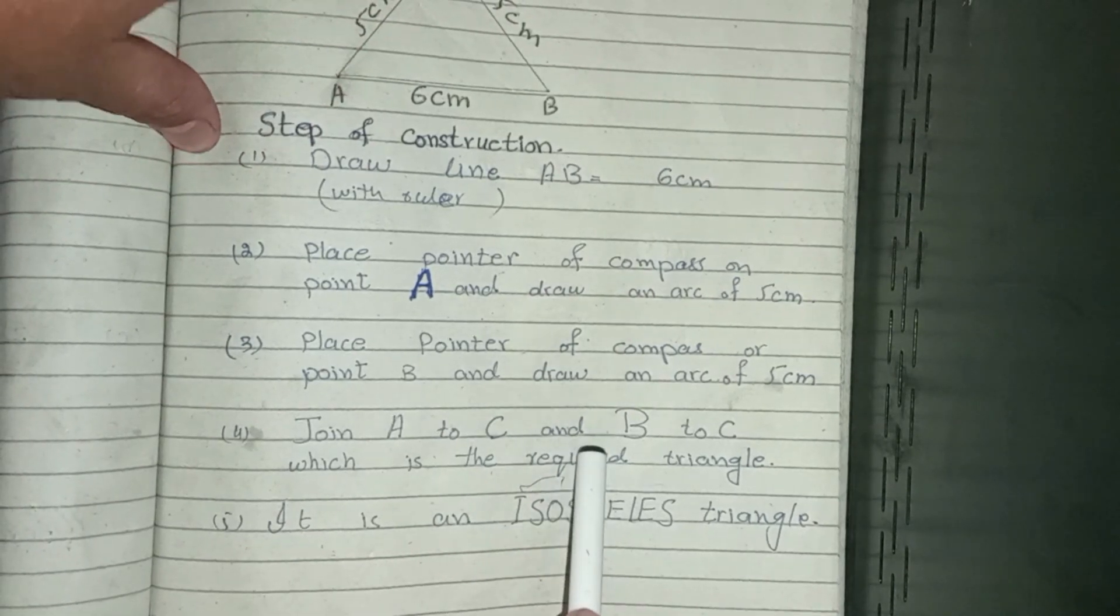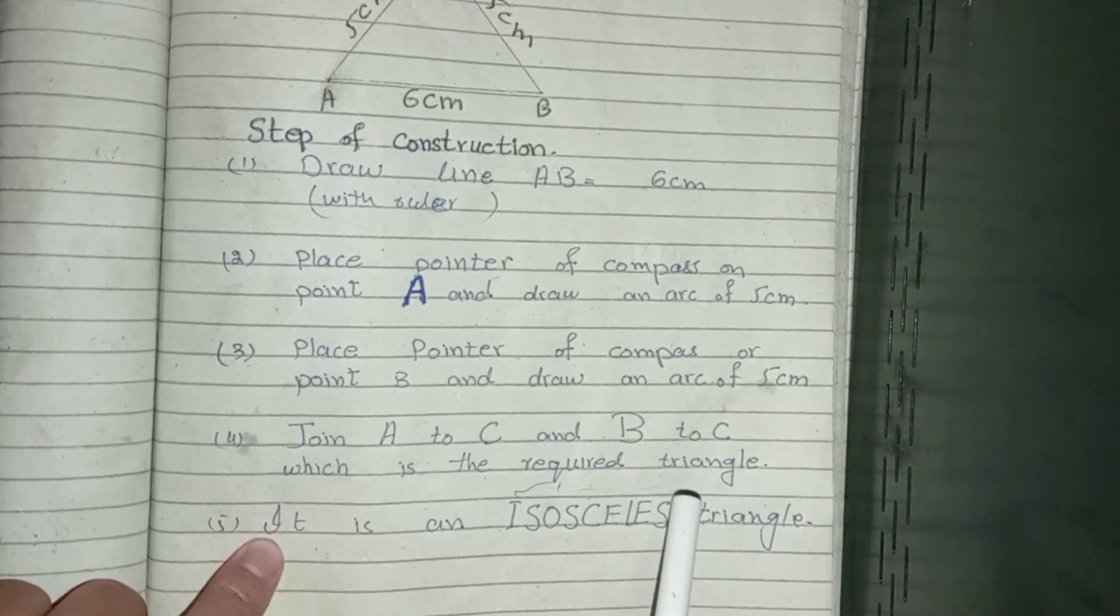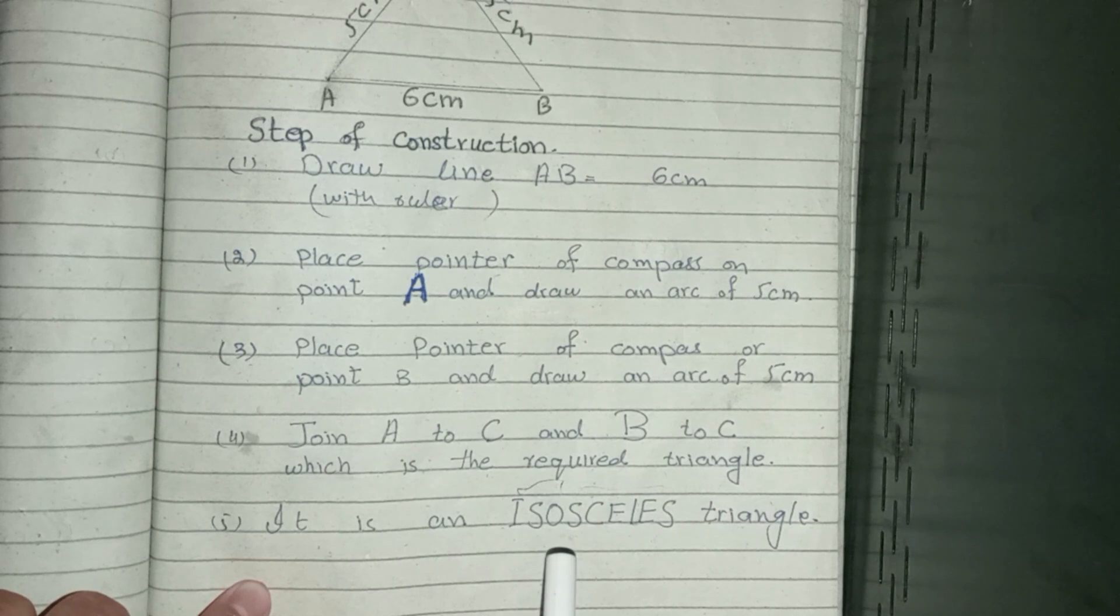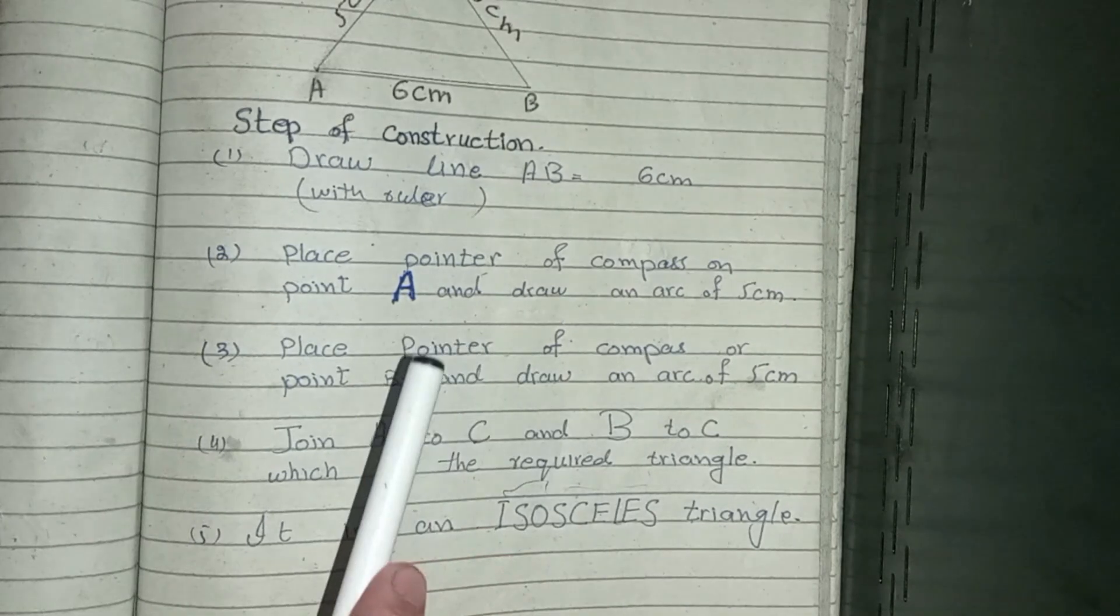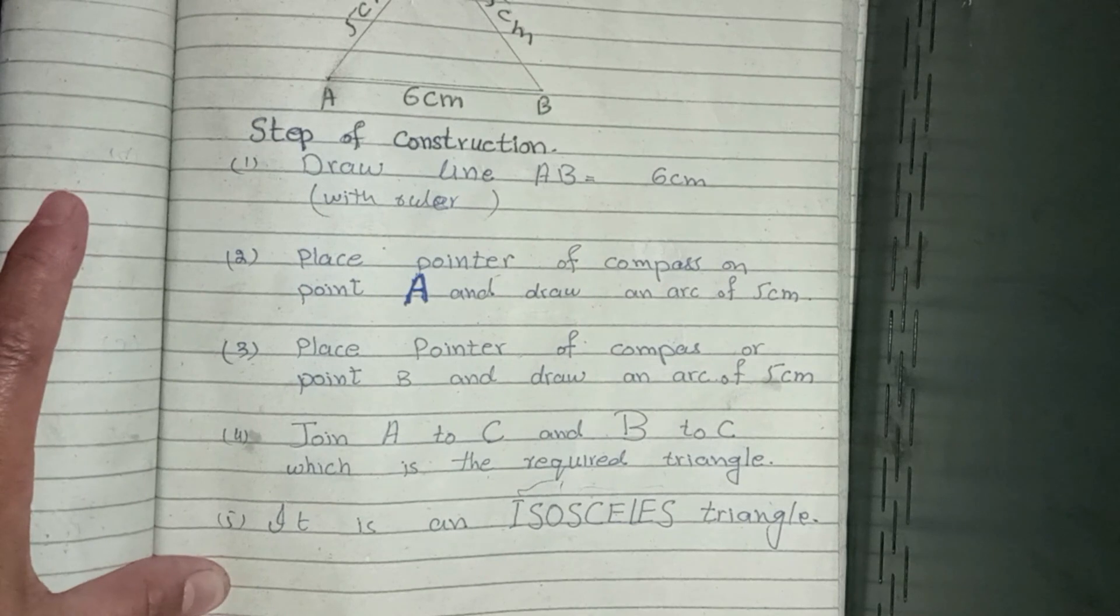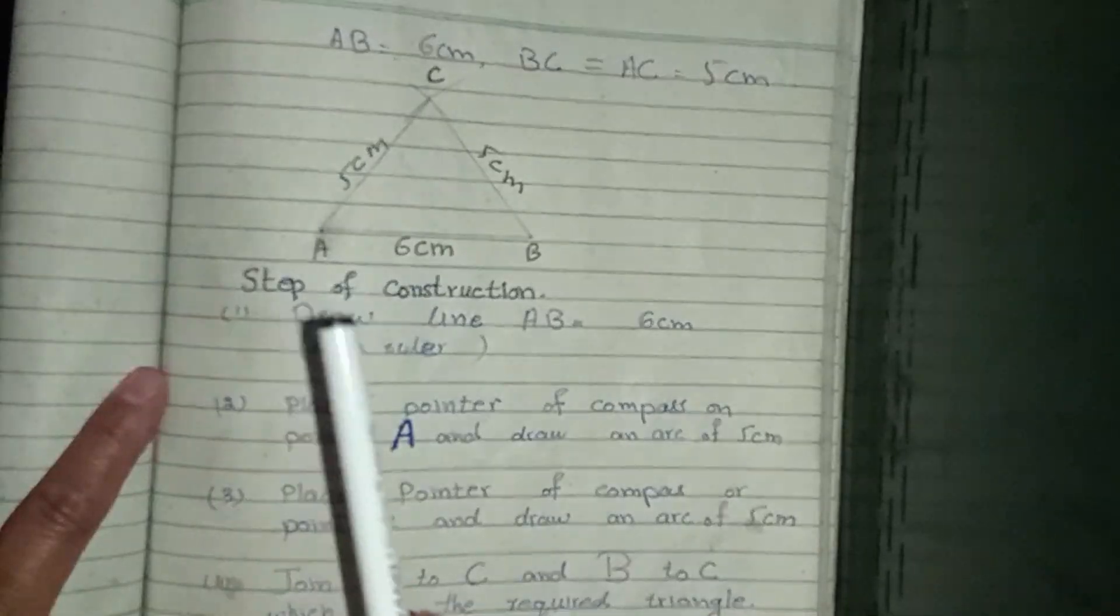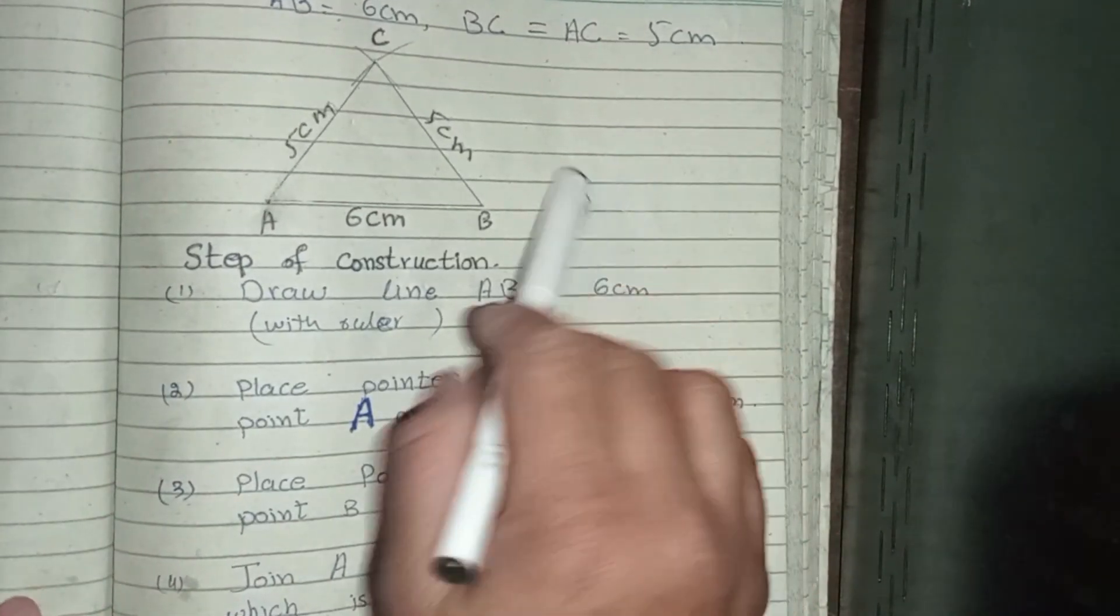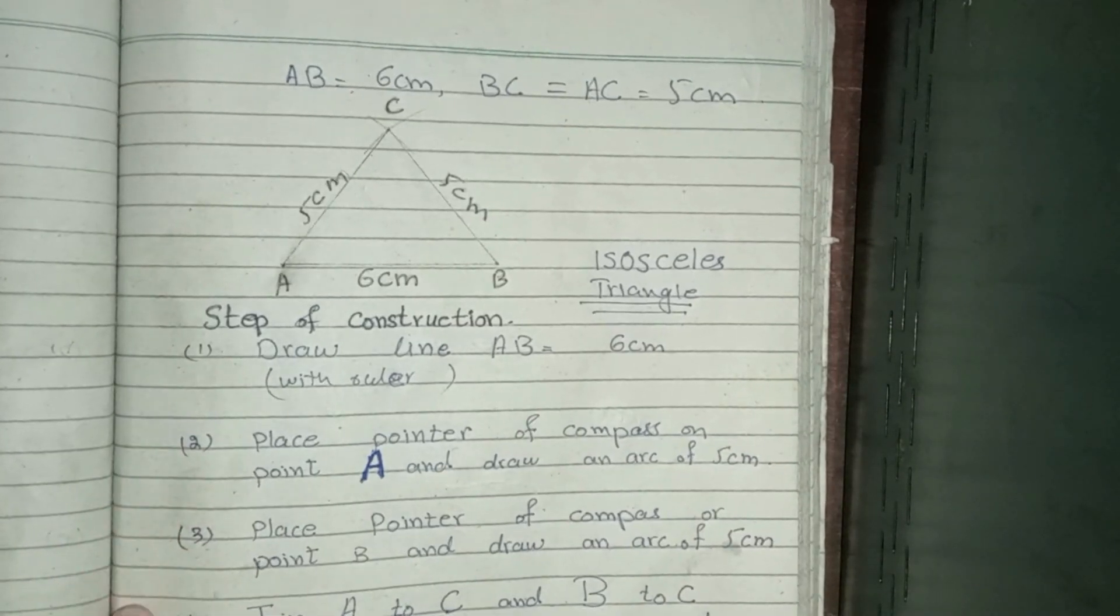Now which triangle is this? It's an isosceles triangle. A triangle in which two sides are equal in measure is called an isosceles triangle. The two sides of this triangle are equal, so it's an isosceles triangle. You can write the name here. Question number two is complete.